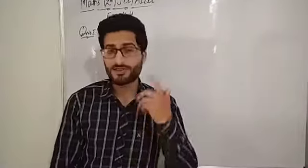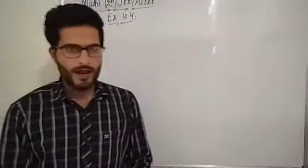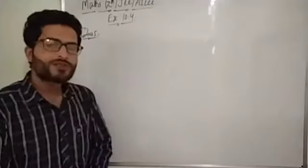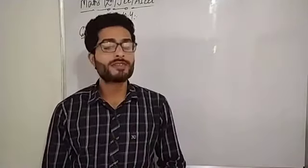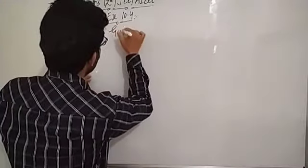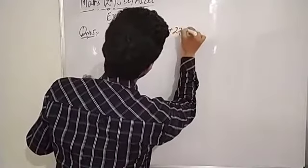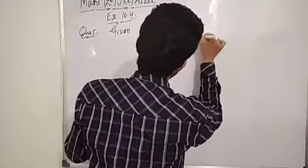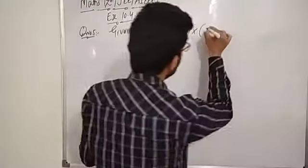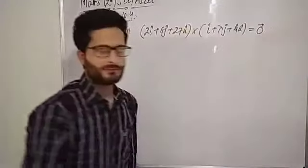Assalamu alaikum dear students. In the previous class we discussed some questions of exercise 10.4 regarding the cross product and the magnitude of cross product of vectors. Now we are on question number five of the same exercise. In question five, we have been asked to find the value of two unknowns lambda and mu, given that the cross product of two vectors is a zero vector.